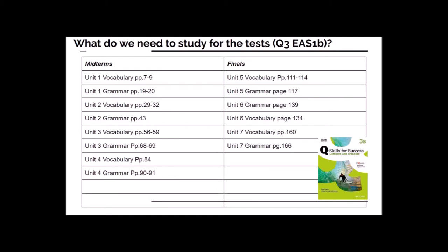This slide is about the information with regards to midterms and finals. If we haven't done the midterms yet, please look at this slide and check out the pages and the units that need to be covered. For the midterms, I've given units 1, 2, 3, and 4. In unit 1, the vocabulary is on pages 7 to 9, and the grammar is on pages 19 and 20. For the finals, we are doing units 5, 6, and 7 — all the pages for the grammar and vocabulary are outlined there.